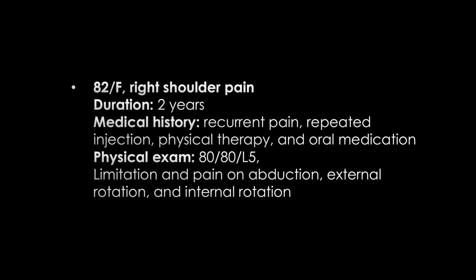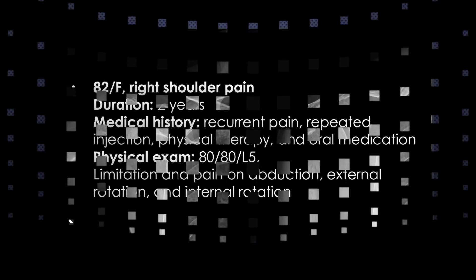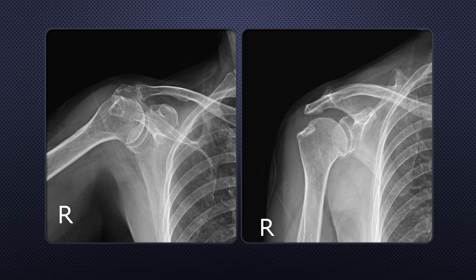Let me describe my patient. She is 82 years old and has had chronic intractable right shoulder pain. On physical examination, she showed a capsular pattern of limitation and pain. Simple x-ray shows sclerosis and depression of the greater tubercle, and marginal erosion of the medial inferior aspect of the humeral head.